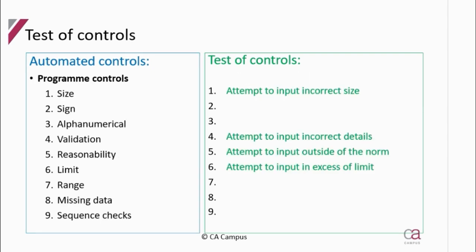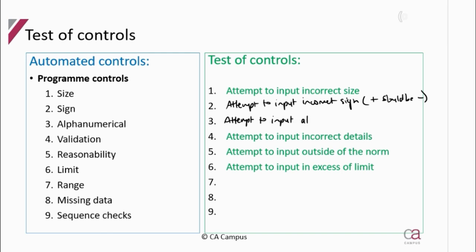For program checks: a size check — attempt to input the incorrect size, for example an ID number requires 13 digits, so attempt to input an ID number of only 11 digits and you should not be allowed. A sign check — attempt to input the incorrect sign, meaning a positive value where it should be negative or a negative where it should be positive. An alphanumerical check — attempt to put a letter where a number should be.